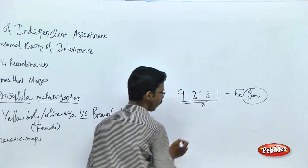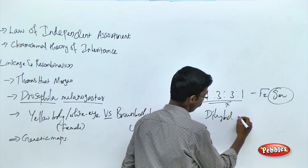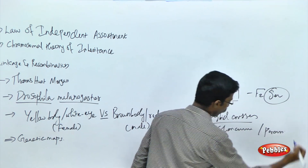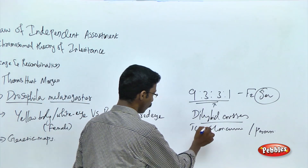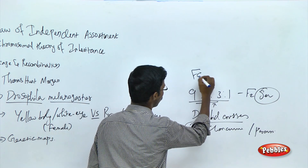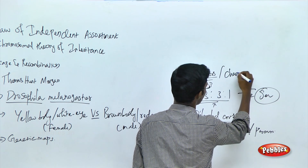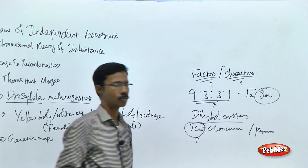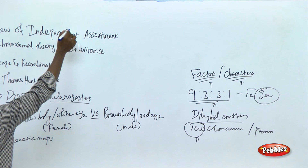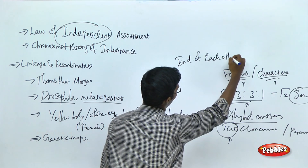From the dihybrid cross, Mendel hypothesized a law called the law of independent assortment. In dihybrid crosses there are 2 different characters of the parents. According to Mendel, he called these as factors — factors which carry a particular character — and these factors are going to be independent of each other. This is what you have to remember.